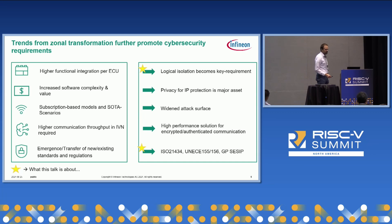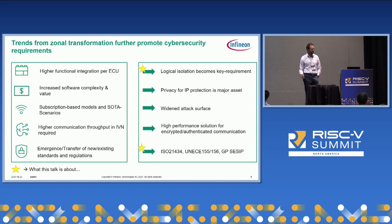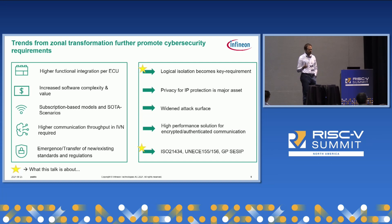The consequence of all of these is shown in the right-hand pane of the slides. One of the most predominant requirements when getting to higher functional integration is that I need strict logical isolation between the formerly separated MCUs or ECUs. Privacy for IP protection is becoming more and more a major asset. Even for non-HSM deployed software, we have a widened attack surface. We need high-performance solutions for encrypted authentication, which promotes specific solutions particularly for routing scenarios — encrypting, MACsec, all that kind of stuff.